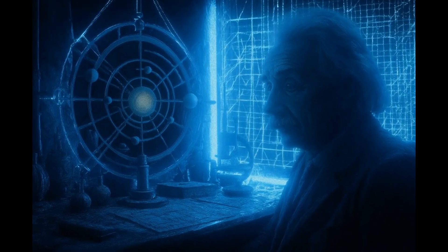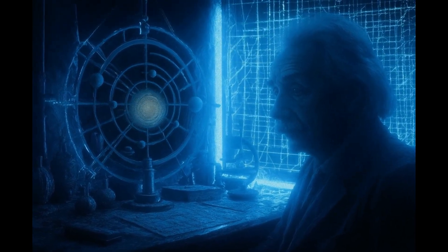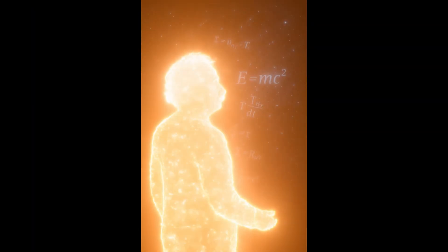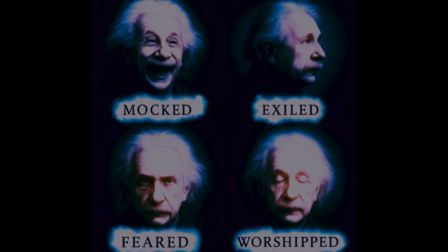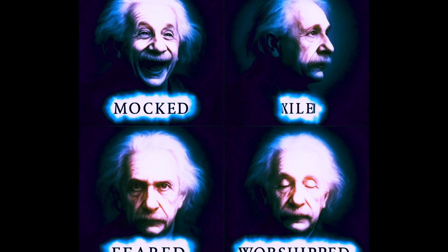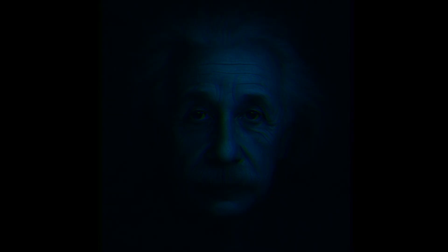Einstein spent his final years chasing a dream of unity, trying to stitch all forces of the universe into one law. He never found it, but his defiance had already changed everything. Mocked, exiled, feared, worshipped—he was not just a man of science, he was a man who bent reality itself. Albert Einstein, the rebel who saw eternity.